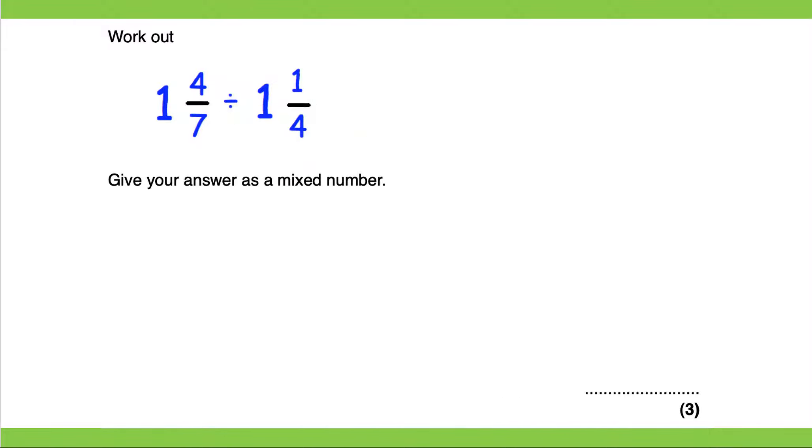Next question. 1 and four sevenths divided by 1 and one fourth. Give your answer as a mixed number. So first of all let's convert this to an improper fraction.